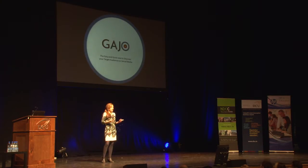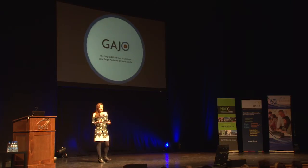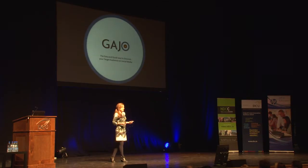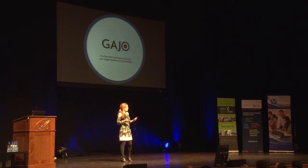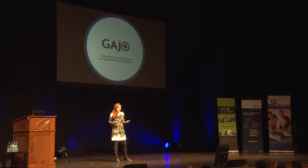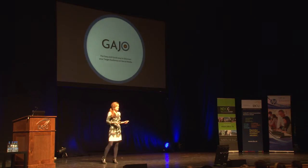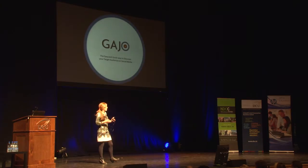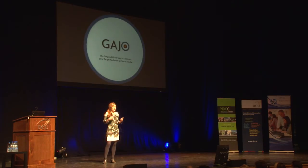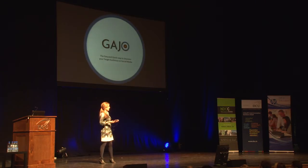We look at opinions of people online about certain products or services. A lot of the technology behind search engines or automatic question answering is also based on natural language processing. One of the specializations in the research lab here in DCU is processing user-generated content — content from forums or social media platforms such as Twitter or Facebook. This content is very different to editorial text because it's full of slang language, emoticons, typos, and spelling and grammar errors, which makes it very challenging for machines to process accurately.